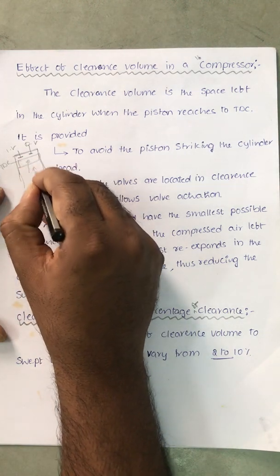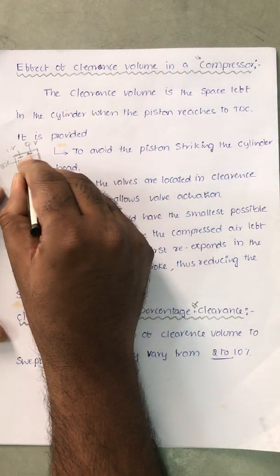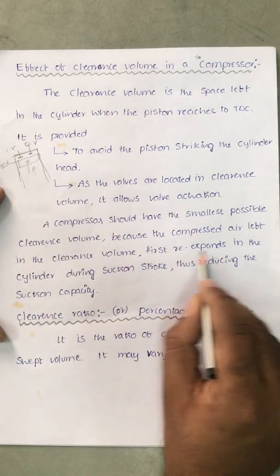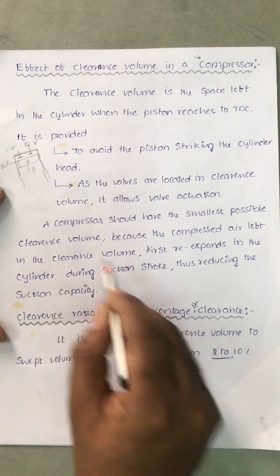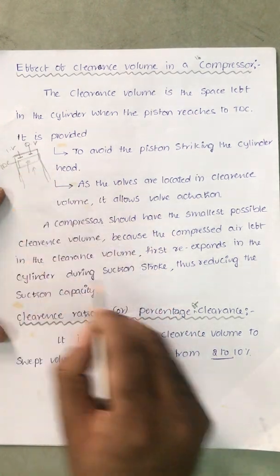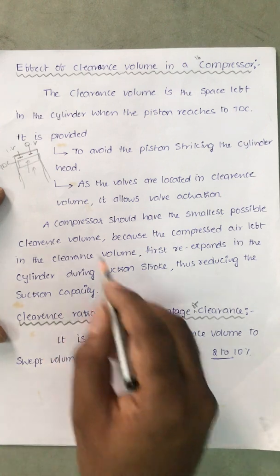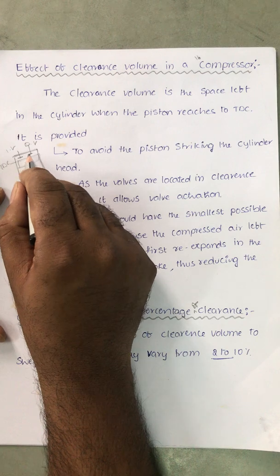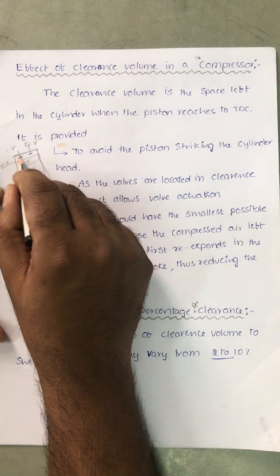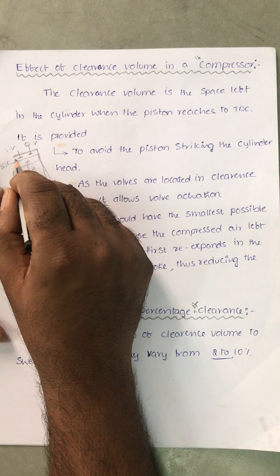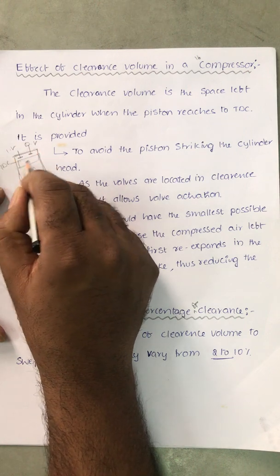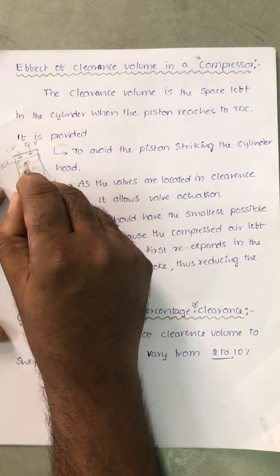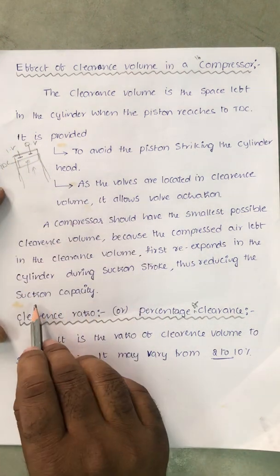During suction, when the piston starts to move downward, the air available in the clearance volume first re-expands. So during the suction stroke when the piston is moving downward, this air expands, thus reducing the suction capacity. Some amount of volume in the cylinder is occupied by the compressed air itself, so the incoming air is disturbed and it automatically affects the suction capacity.